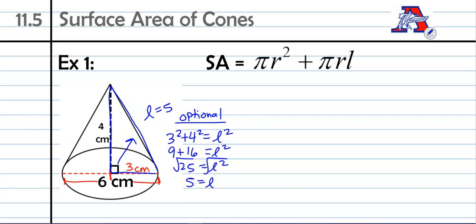Now we have what we need. We found our slant height is five and we know our radius is three. So we're good to go with our formula. We can just plug in: SA = π times our radius, which is three, squared, plus π times that radius once again times the slant height, which is five.